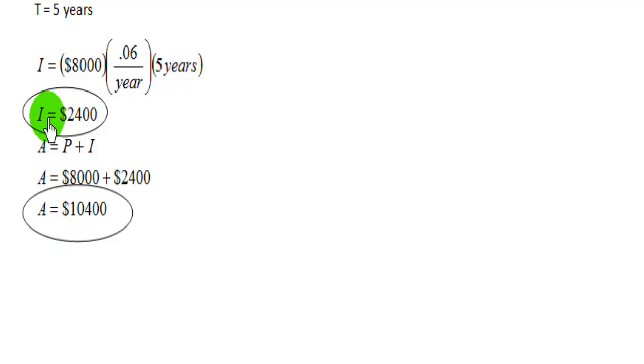The second type of formula for calculating interest is called compound interest. And what that does is it takes simple interest, let's say twelve times a year. If you are compounding interest twelve times a year, that means at the end of every month, you're going to calculate simple interest. That interest is then added to the principal, making a new principal. That way, they're getting interest on their interest.